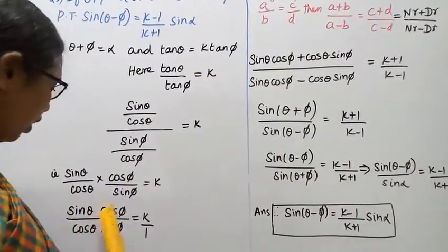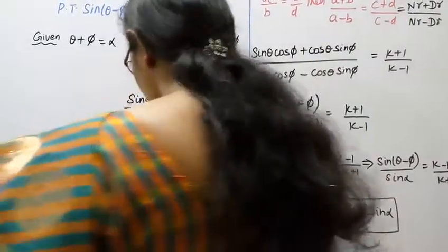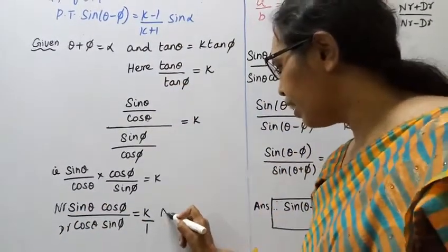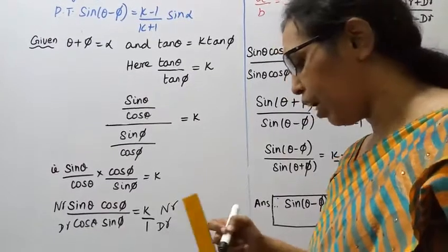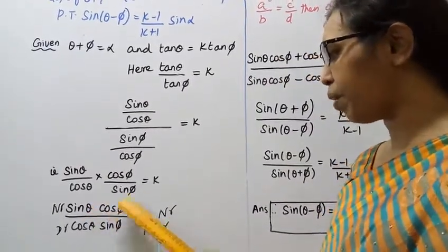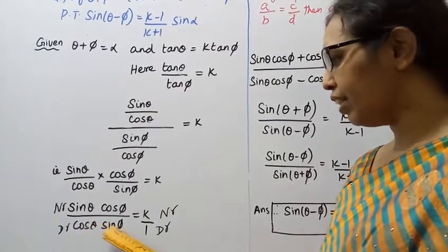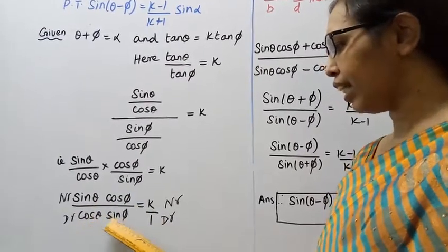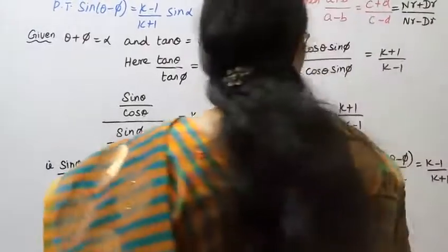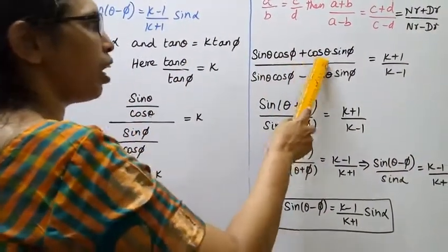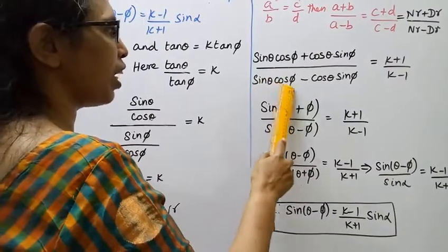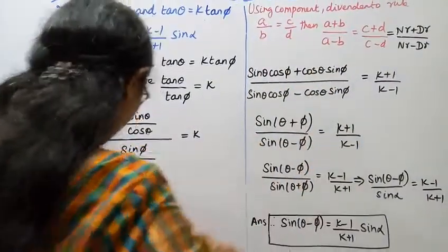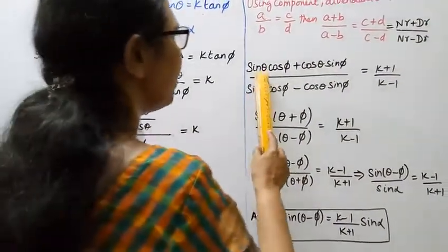Applying this rule to our expression: sin theta cos pi plus cos theta sin pi, divided by sin theta cos pi minus cos theta sin pi, equals k plus 1 by k minus 1.